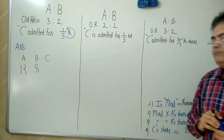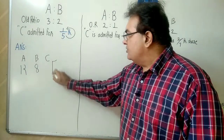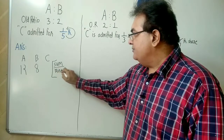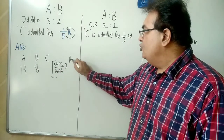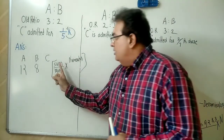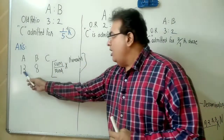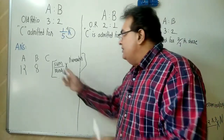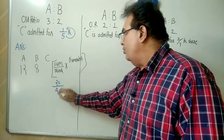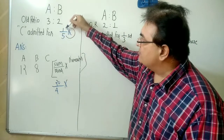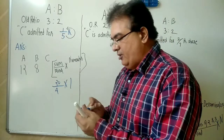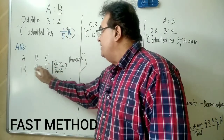Now to find C's share: take the sum of these two answers divided by whatever is in your mind, multiplied by the numerator of the new partner. So: 12 + 8 = 20, divided by 4 = 5, times 1 = 5. The answer is 12:8:5 — calculated orally without any written calculation!